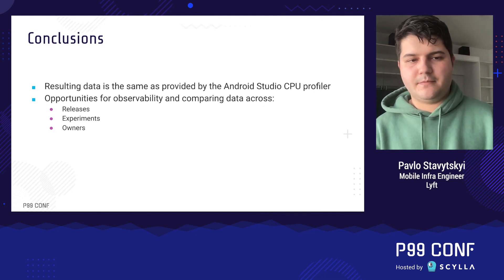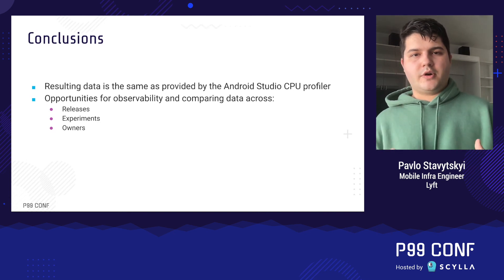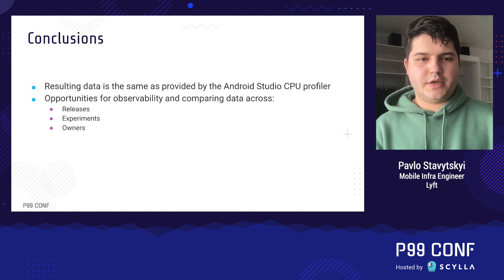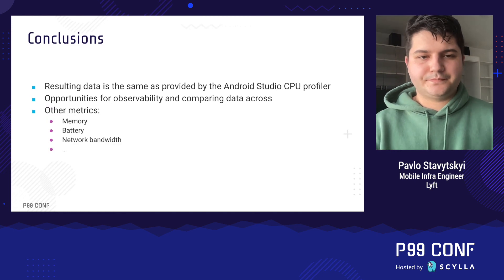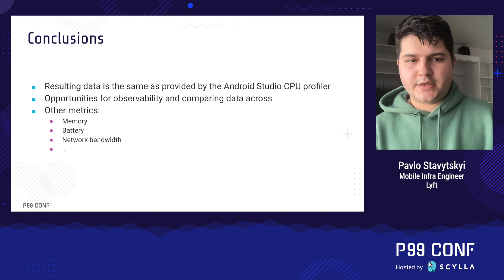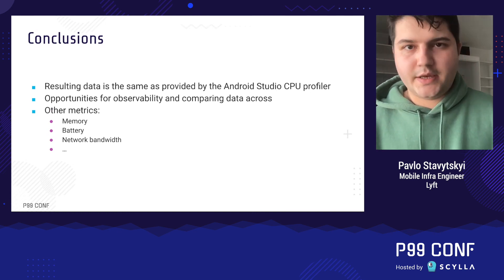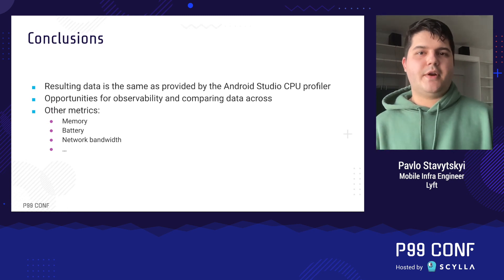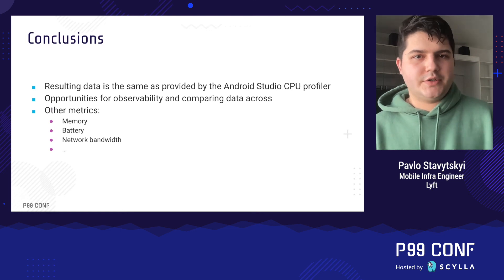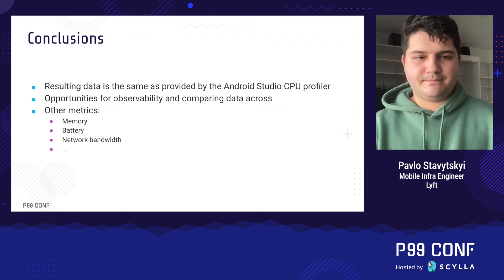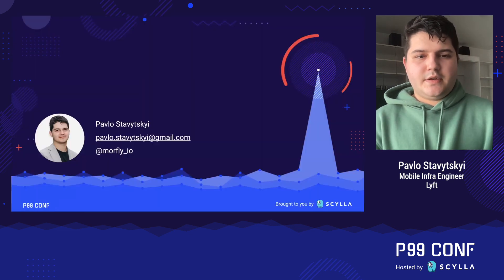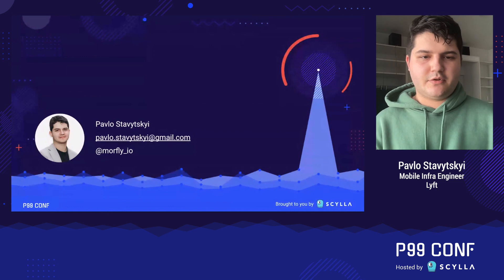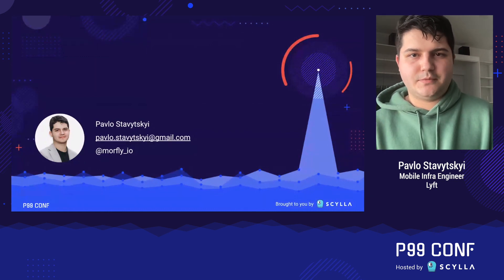Of course all those features and approaches require further exploration, but they all build on top of what's described in this talk. The same approach can be used to collect other metrics like memory, battery, and network bandwidth — memory in particular proved useful for identifying regressions and memory leaks introduced by experiments. Thanks for joining this talk — if you want to discuss this topic further, please contact me on Twitter or via email. I'd be happy to have a discussion.